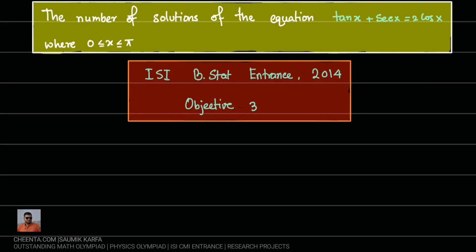Let's discuss objective problem number 3 from ISI B-STAT entrance 2014. This asks for the number of solutions of the trigonometrical equation tan x plus sec x equals twice of cos x, where x varies from 0 to π.